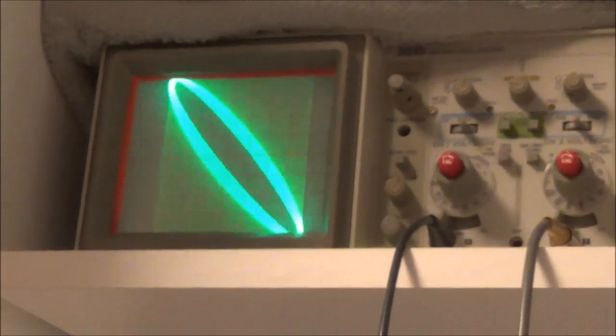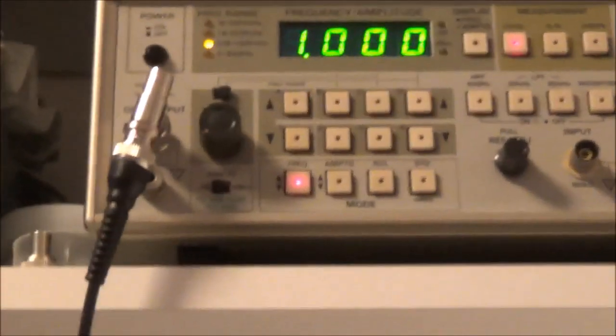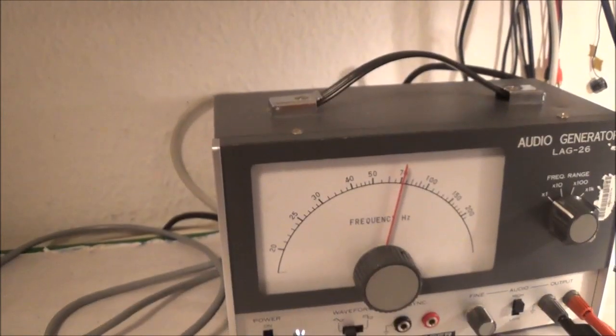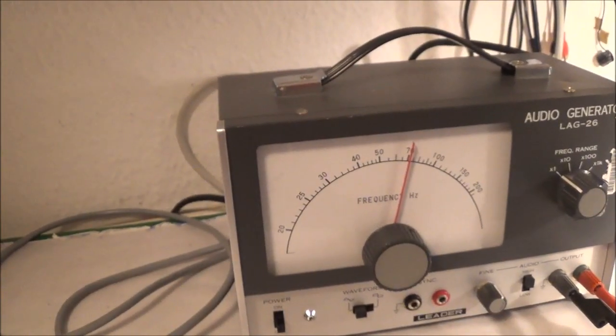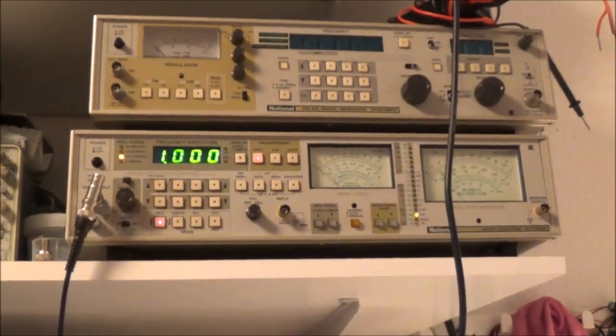And here is the pattern. It's round but it's moving, so the frequencies are still off from each other. Now I'm going to go ahead and adjust the HP 3325 and see when I can get it, the pattern to stop. And that means both frequencies are pretty near equal or equal.